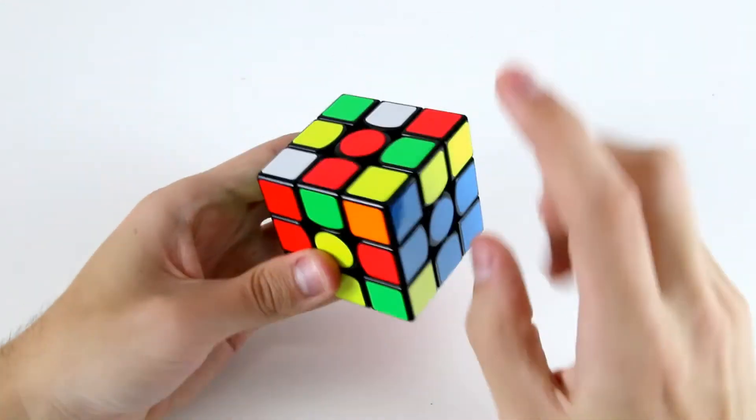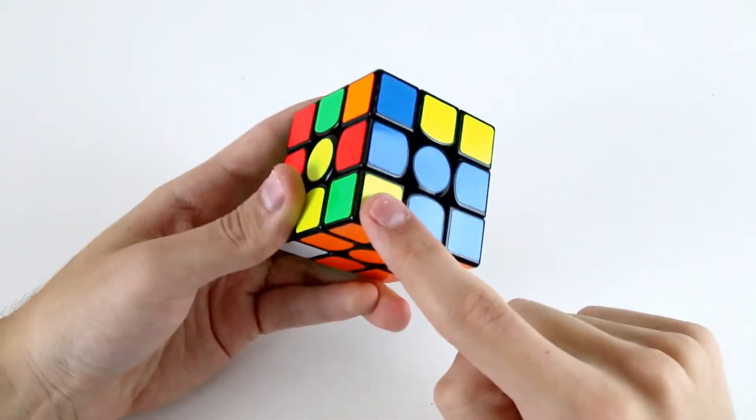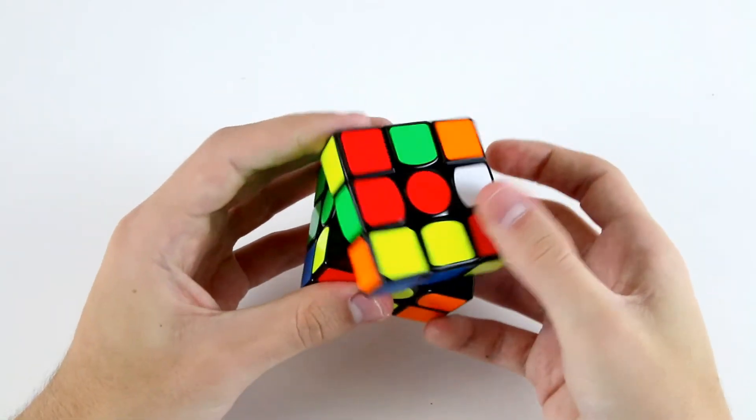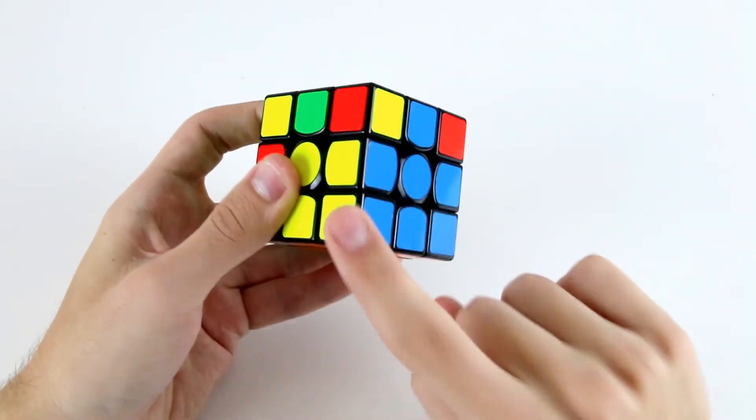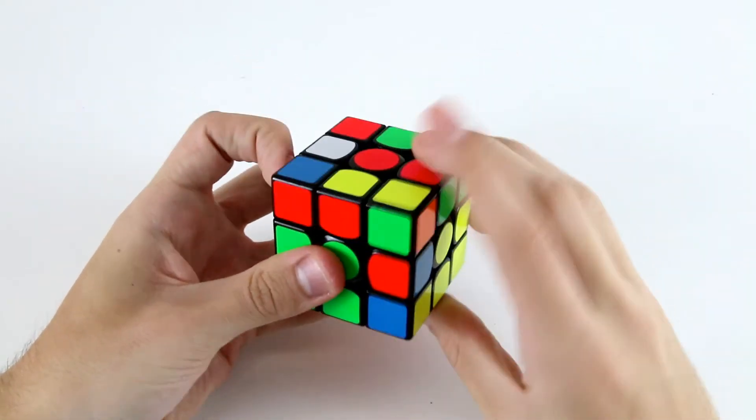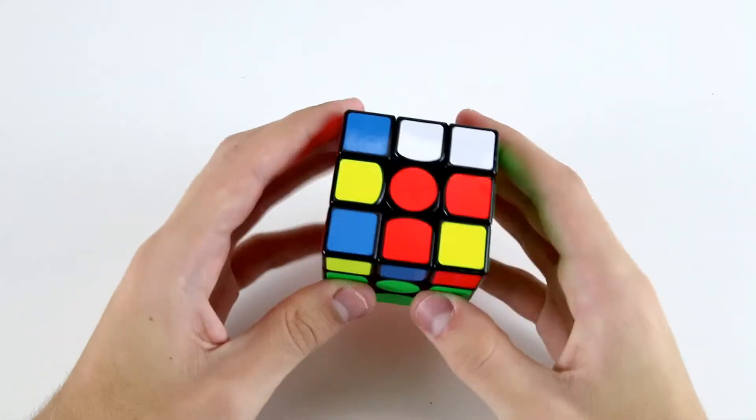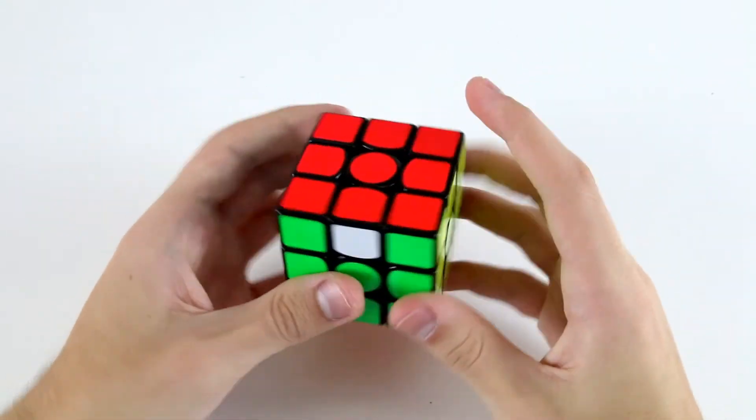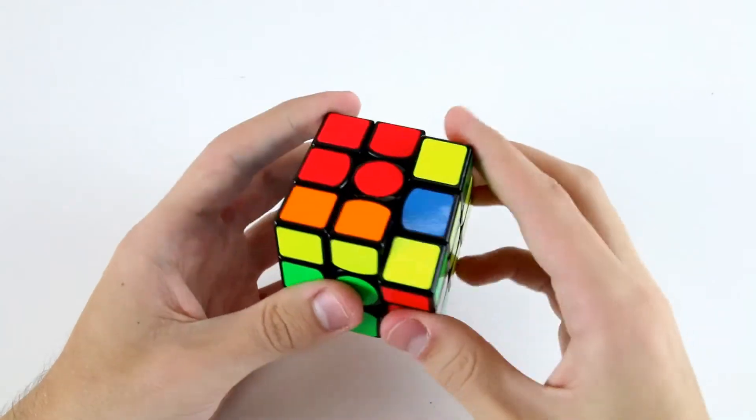And also whilst I'm solving these two, I want to be watching this edge and this corner of my last F2L pair. So immediately after I finish solving it, I can rotate and solve that. Now I've got OLL, PLL, and then U permutation.